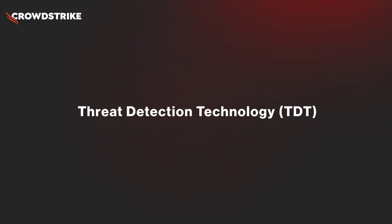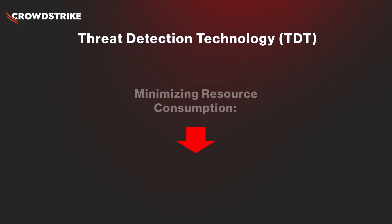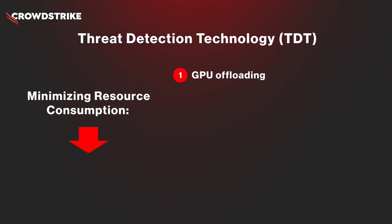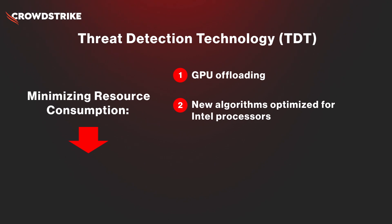Working in partnership with Intel Corporation, CrowdStrike has reimagined memory scanning, enabling fast, high-performance scans by integrating Intel's Threat Detection Technology (TDT) with CrowdStrike's advanced memory scanning algorithms. In partnership with Intel, we've minimized resource consumption with key hardware optimizations such as GPU offloading and new algorithms optimized to run on Intel processors, all to limit memory scan sizes and duration. Memory segments can logically down-select to limit scans to just what makes sense, depending on the artifact type.